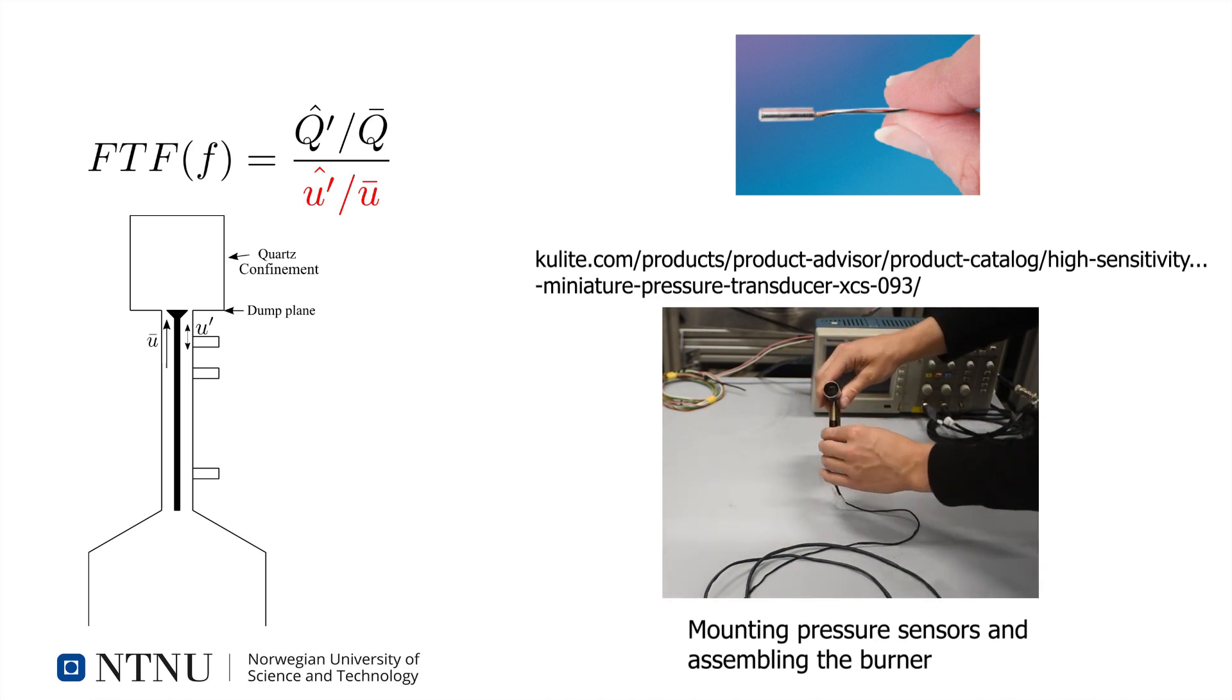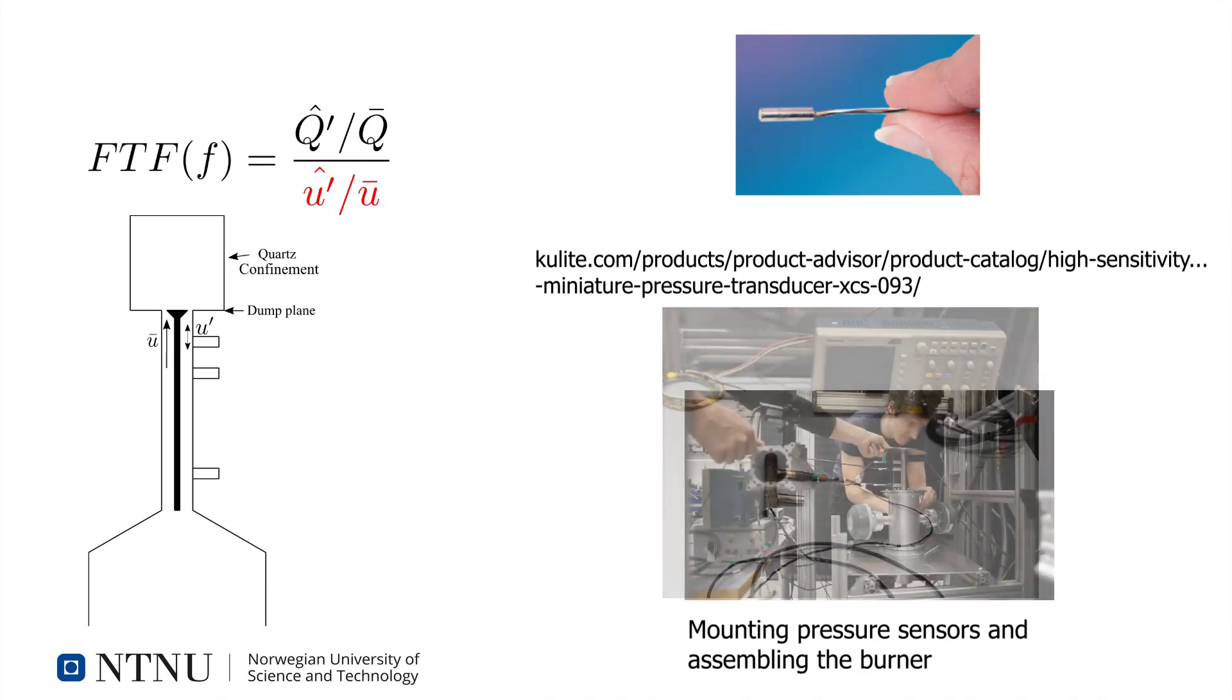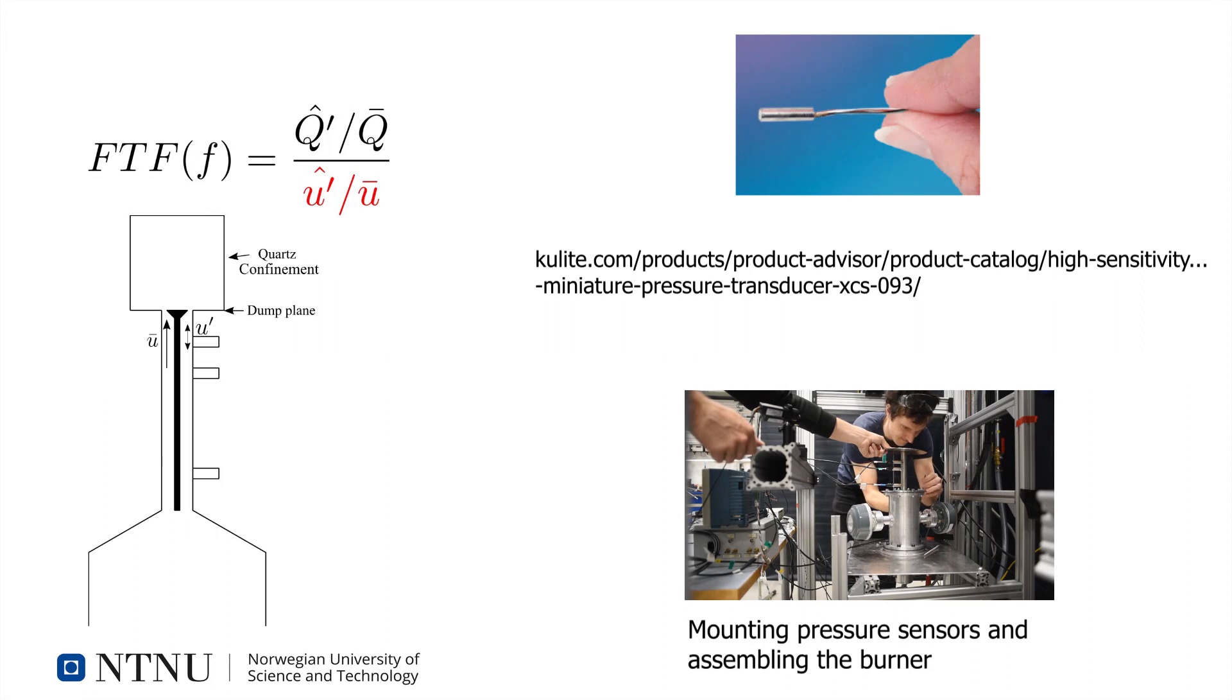It is crucial to check the relative calibration between the pressure transducers, both for phase and amplitude. It is also recommended to check the velocity fluctuations predicted by the multiple microphone method with hot wire measurements. As well as being a valuable check, this can be very useful in identifying convective disturbances that may be filtered out in the multiple microphone method, and may explain features of the FTF that would otherwise be mysterious.